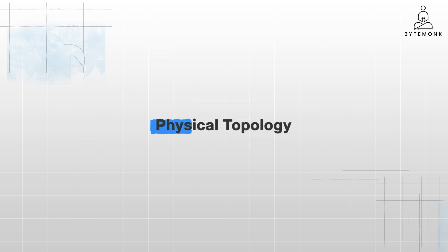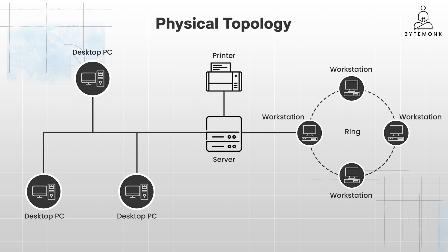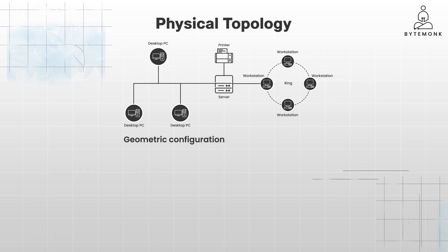Physical topology refers to the concrete arrangement of devices and connections within a network — it's the blueprint that guides the installation and configuration of hardware components. Physical topology includes the geometric configurations, such as the shape of the network, be it point-to-point, bus, ring, star, mesh, tree, and more.